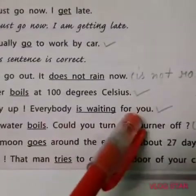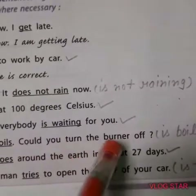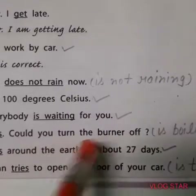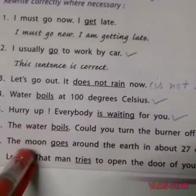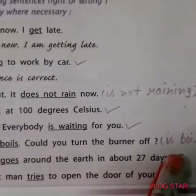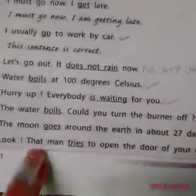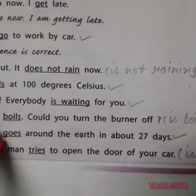'Hurry up, everybody is waiting for you' — this is also correct. Next: 'The water boils, could you turn the burner off?' This is wrong. Correction: 'The water is boiling, could you turn the burner off?' Next: 'The moon goes around the earth in about 27 days' — this is correct. Next: 'Look, that man tries to open the door of your car' — this is wrong; it should be 'is trying'.